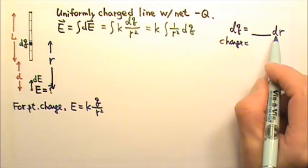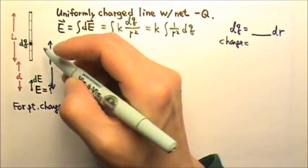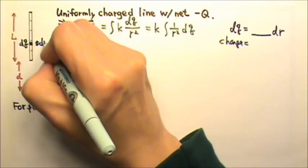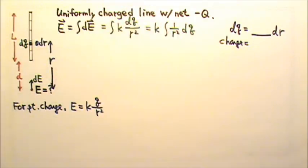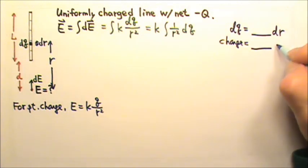And what is the dr? This is r. dr would be like delta r. So dr is the length, the little length of this segment. So charge equals to what times the dr, which is the length.